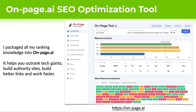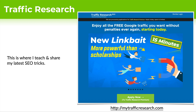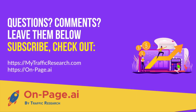I hope you've enjoyed this. I want to mention that onpage.ai is my SEO optimization tool — this is where I've taken all my SEO knowledge and put it into a tool that helps you outrank tech giants, build authority websites, build better links, and work faster. I use it every single day, and agencies use it to rank their clients on Google. Check out onpage.ai. And trafficresearch.com is where I teach and share all my latest SEO tricks. If you have questions or comments, leave them below, subscribe if you like this content. My name is Jack Lanchus and I'll talk to you soon.